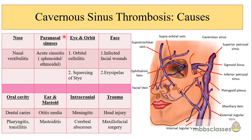Diseases of the eye and orbit that can lead to thrombosis include orbital cellulitis and squeezing of a stye. The superior and inferior ophthalmic veins are the major venous channels of the orbit; if a patient is suffering from orbital cellulitis, via these ophthalmic veins draining into the cavernous sinus, they may develop cavernous sinus thrombosis. A stye is an inflammatory condition of the eyelid involving inflammation of the eyelash follicle and its associated glands. The post-tarsal venous plexus of the eyelid drains into the superior ophthalmic veins, which drain into the anterior part of the cavernous sinus.